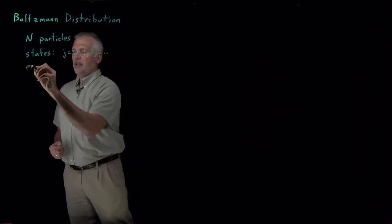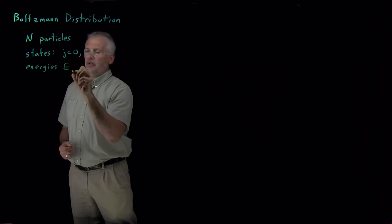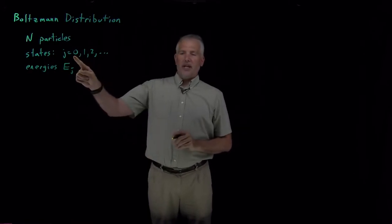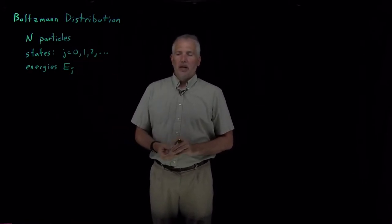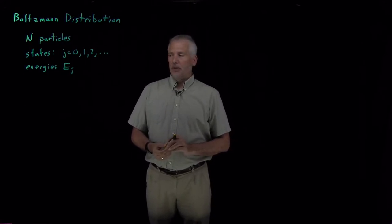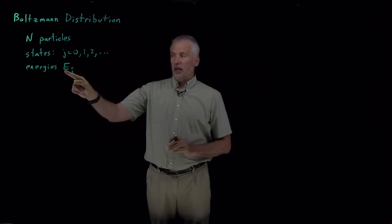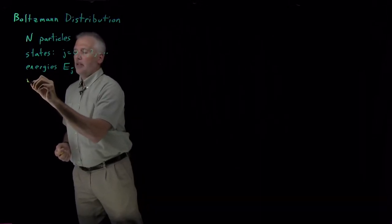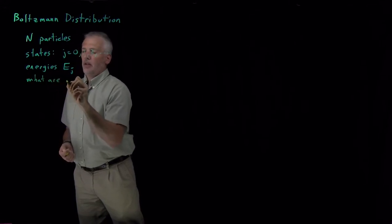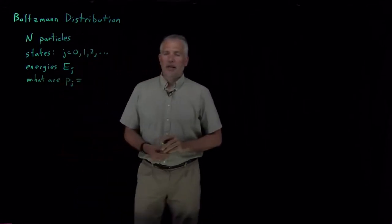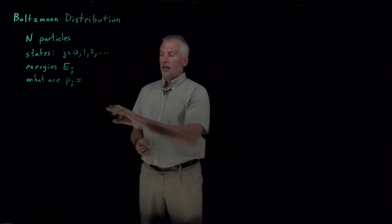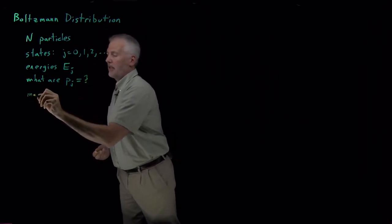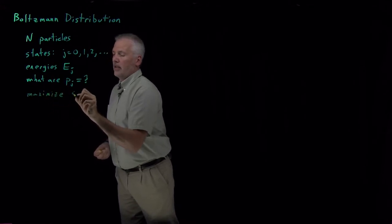Each one of those states has an energy. In the previous example, for simplicity, we said this state had an energy of zero, one, and two — but that's not necessarily true. Any individual state might have a completely arbitrary energy. So each state has its own energy labeled E sub 0, E sub 1, E sub 2. Our goal is to find the probability that each state is occupied — is it 50-50 or not? What are the probabilities that maximize the entropy?